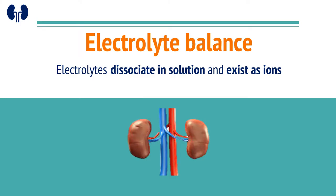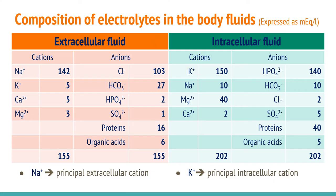Let's move toward electrolyte balance. The compounds which readily dissociate in a solution and exist as ions — positively and negatively charged particles — are called electrolytes. These electrolytes are well distributed in the body, and various body fluids contain different amounts of electrolytes. From the table shown, we can conclude that sodium is the major or principal extracellular cation, whereas potassium is the principal intracellular cation.